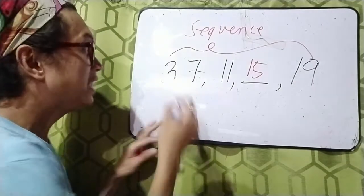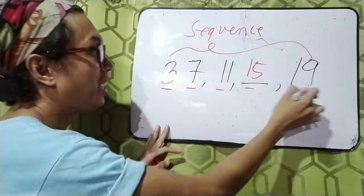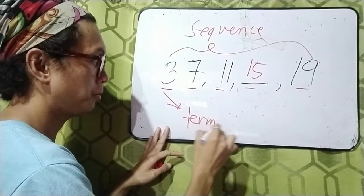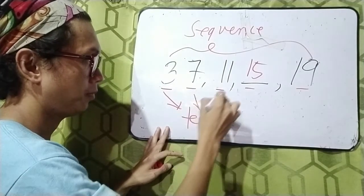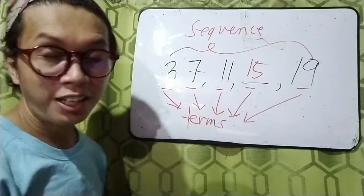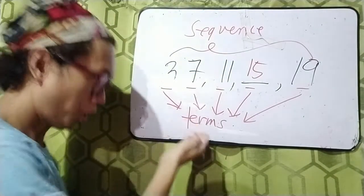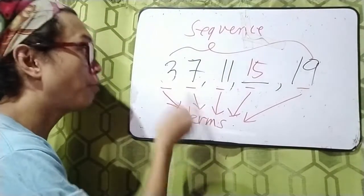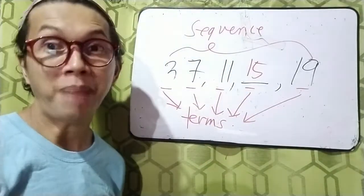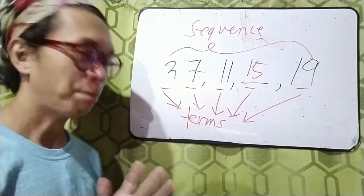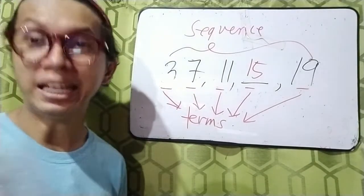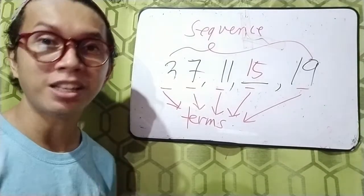Also, the name of individual numbers here is terms. So the sequence is composed of terms. Terms refer to the numbers in a pattern or following a certain pattern. How are we going to identify the term? We can identify the term by its position.